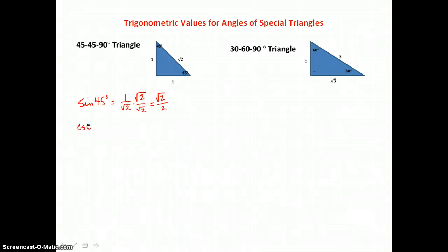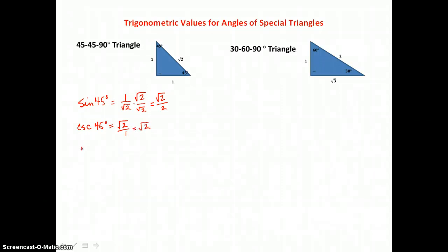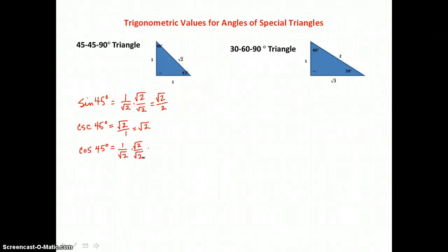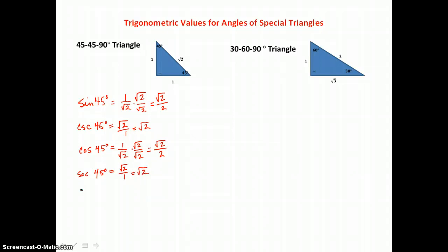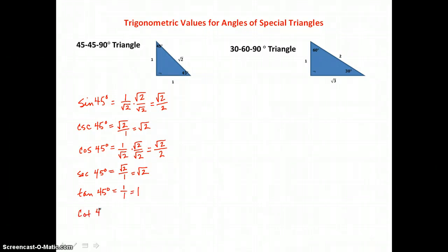The cosecant of 45 degrees is the reciprocal of sine, giving √2. The cosine of 45 degrees is adjacent over hypotenuse, or 1/√2, rationalized to √2/2. Its reciprocal, the secant of 45 degrees, is hypotenuse over adjacent, or √2. The tangent of 45 degrees is opposite over adjacent, which is 1/1 = 1, and the cotangent of 45 degrees is adjacent over opposite, also 1/1 = 1.